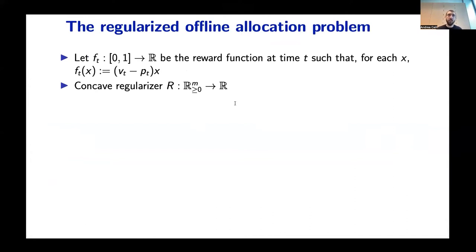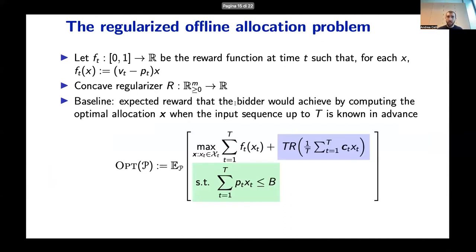We can start from the regularized offline allocation problem. If we define ft to be the reward function of the bidder at time t, and if we are given a concave regularizer R, then this is the baseline that we consider to understand the performances of our algorithm. In particular, you can see that in the green box we have the budget constraints, and in the blue box we have this regularization term which we will use to model distributional preferences. We have to take the expectation over all the possible input sequences that we may observe.